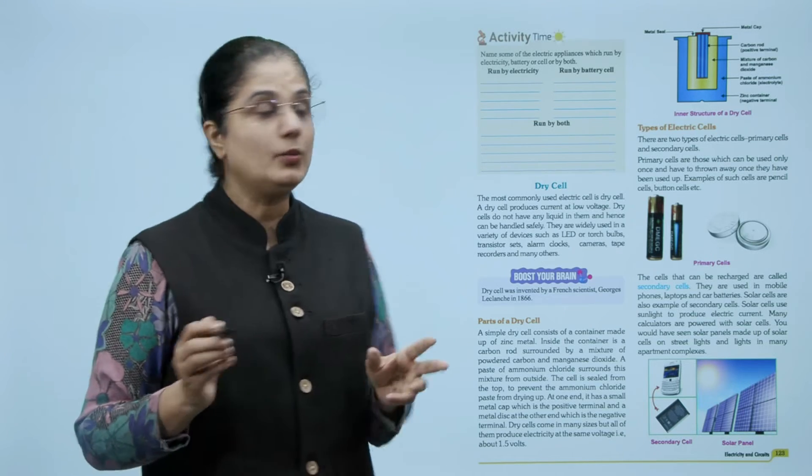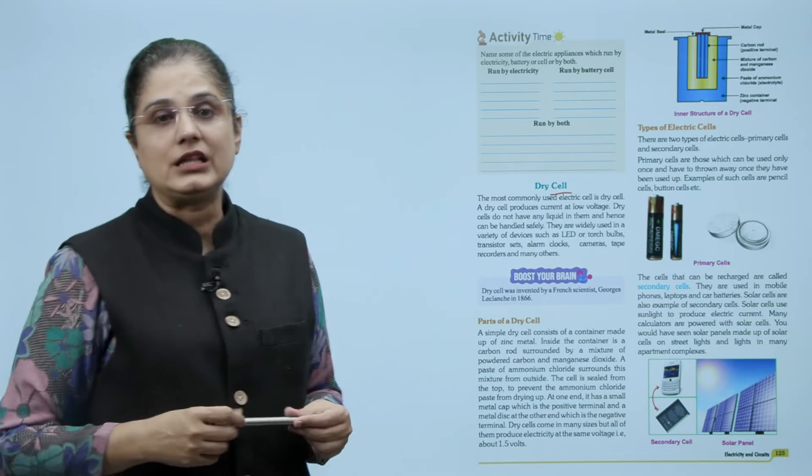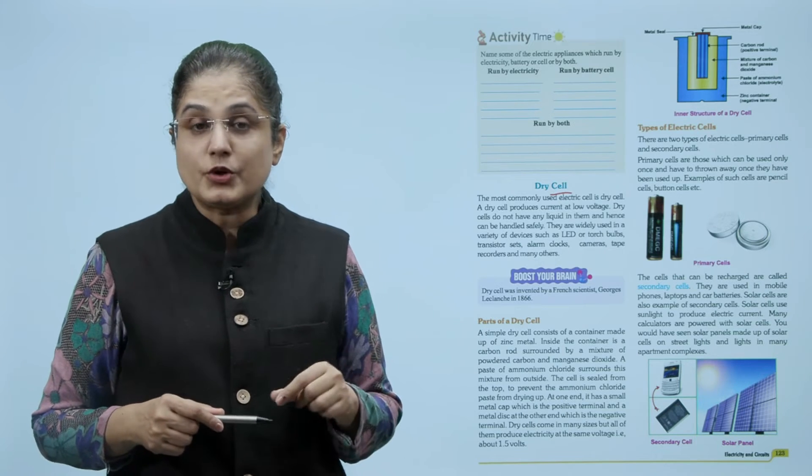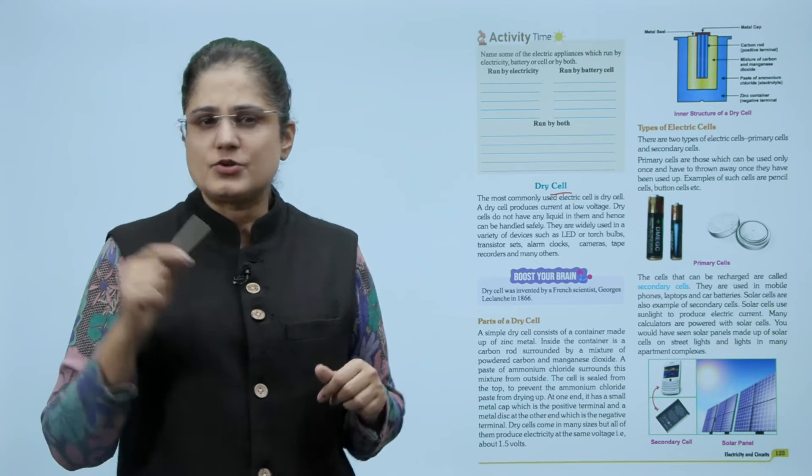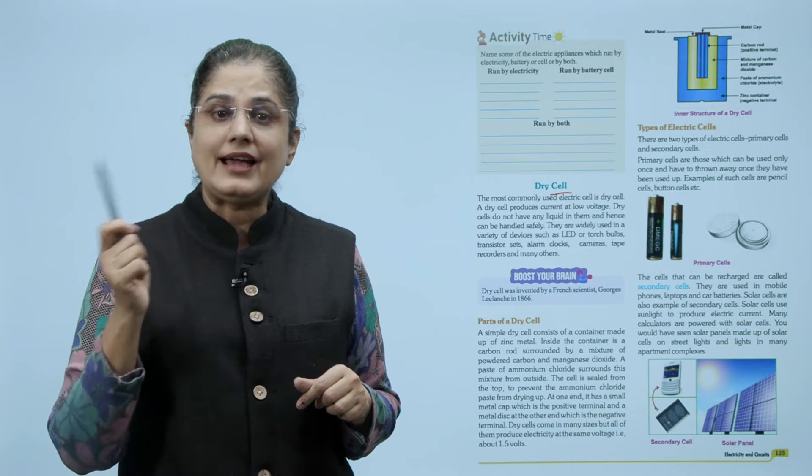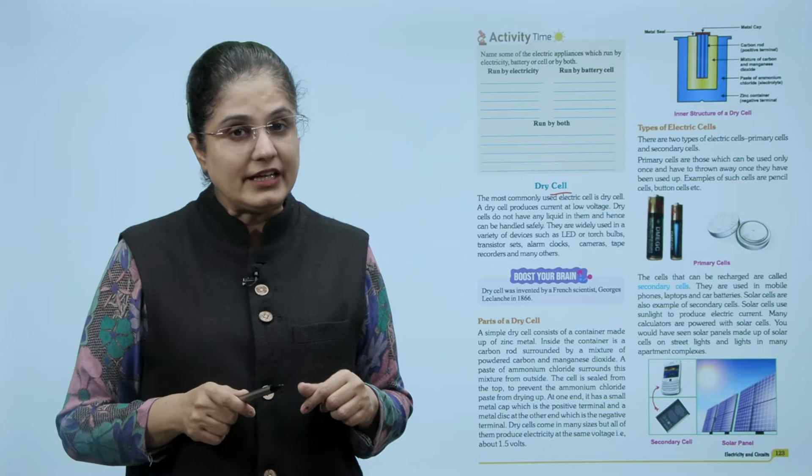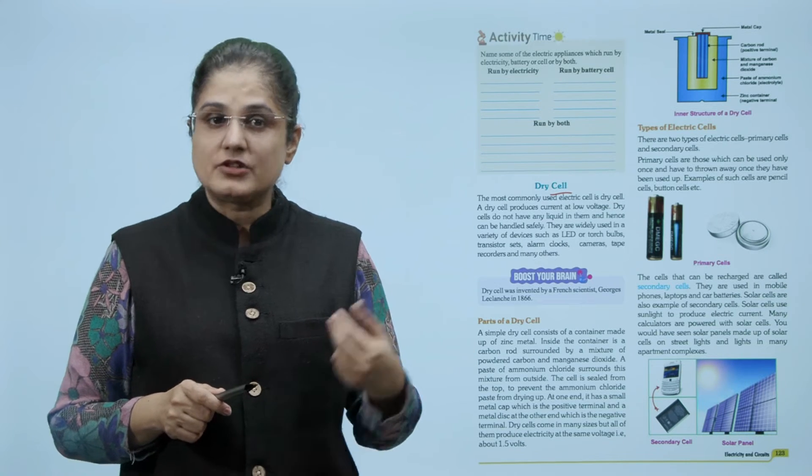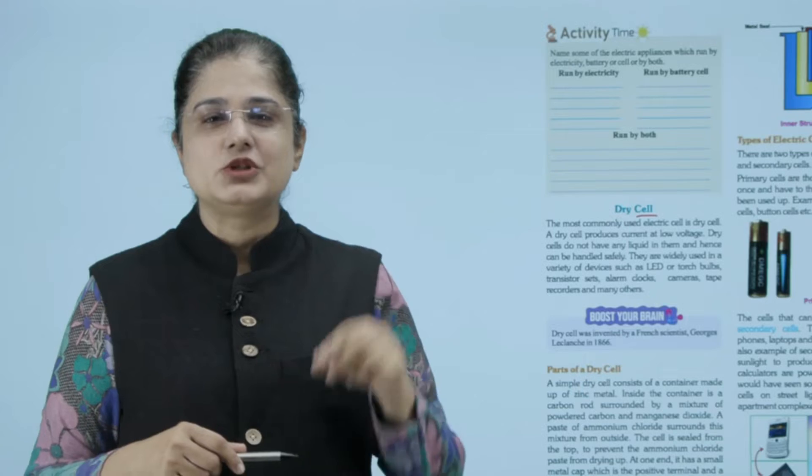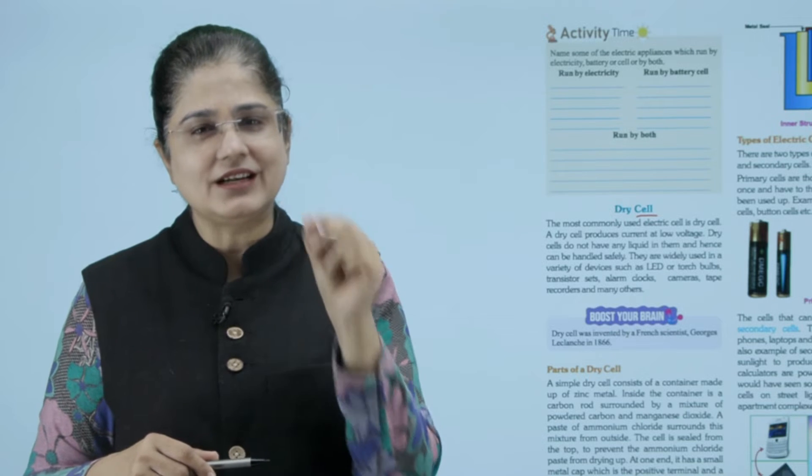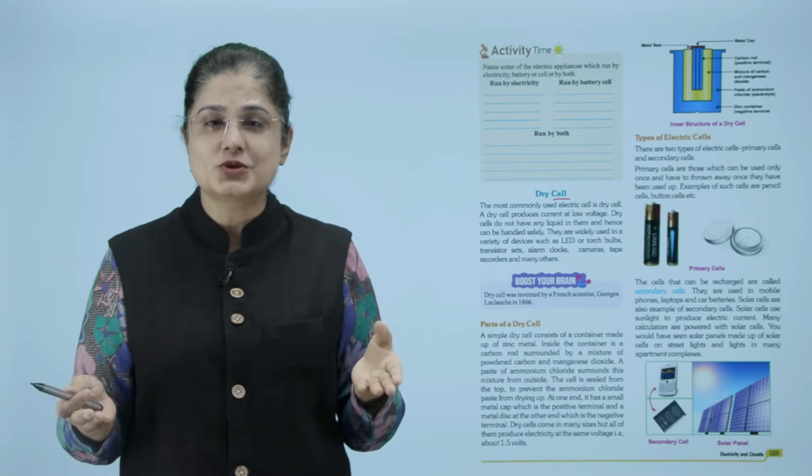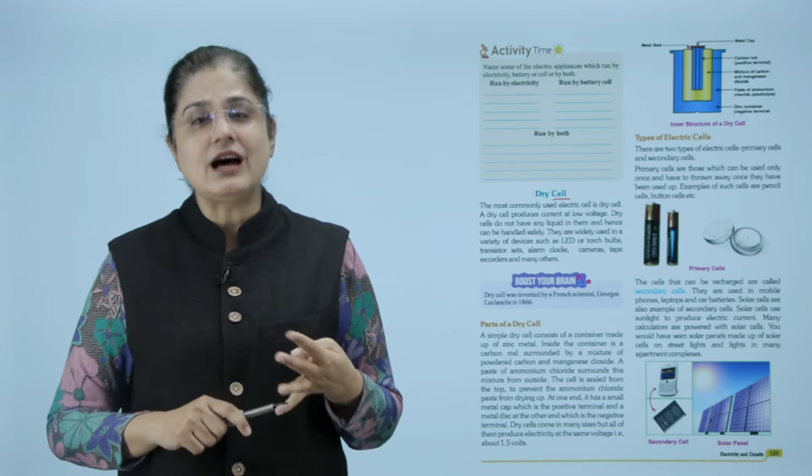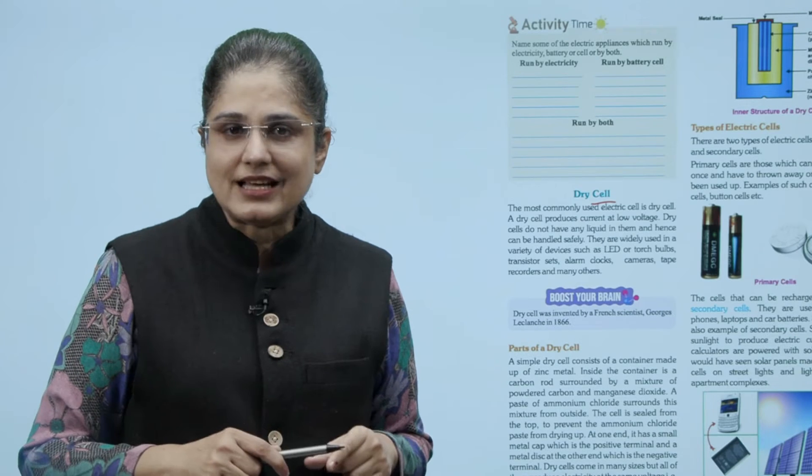Now we come to dry cell. The most commonly used electric cell is dry cell. A dry cell produces current at low voltage. Dry cells do not have any liquid in them and hence can be handled safely. They are widely used in the variety of devices such as LED or torch bulbs, transistor sets, alarm clocks. जो dry cell है वह बहुत low voltage current produce करता है और इसका बहुत ज्यादा use होता है हमारी LED में, torch bulb में, transistors में, alarm clocks में, cameras में।